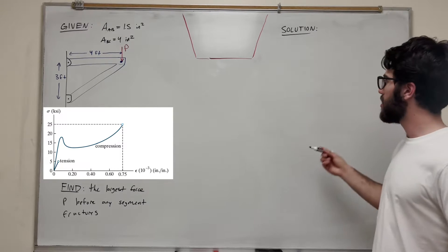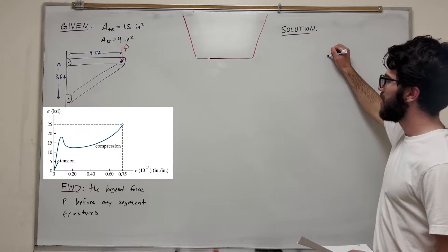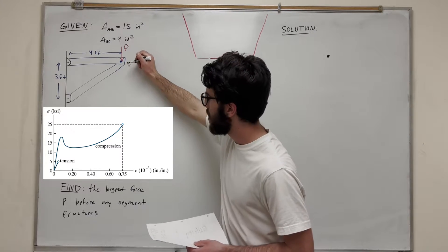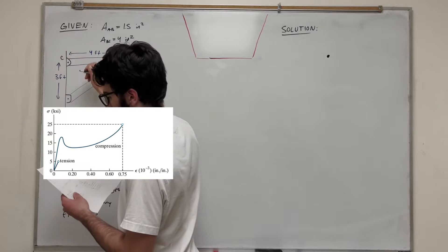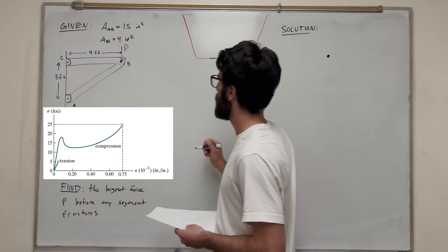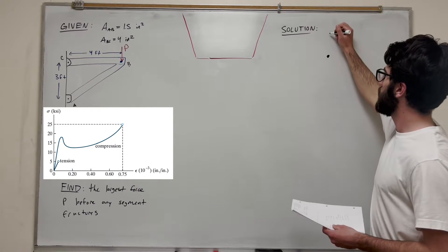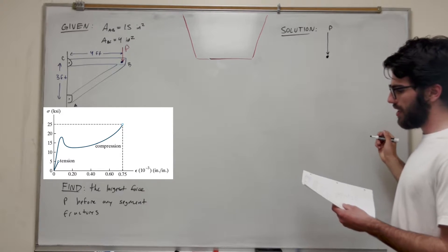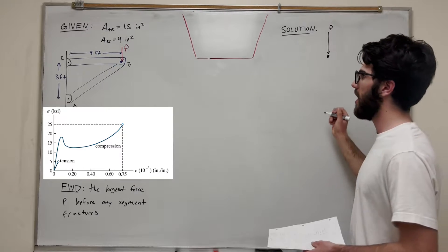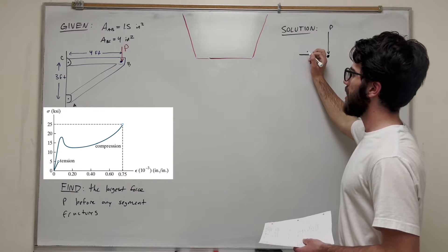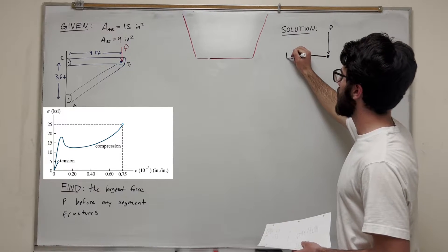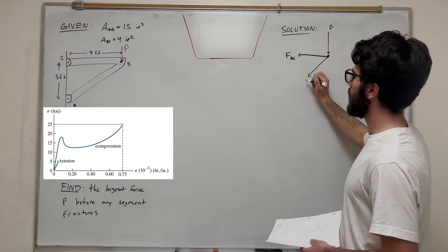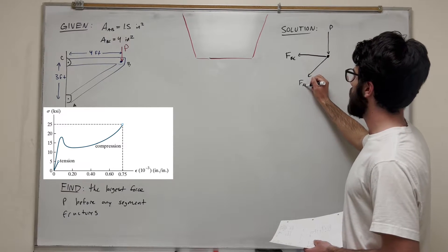Let's start a free body diagram. We'll draw this at point B — so this is B, this is C, and this is A. Let's assume P is pushing down. We'll assume everything's in tension; we can change that later if we find out otherwise. So we're going to assume that BC is in tension, giving us force BC, and we'll have force AB.